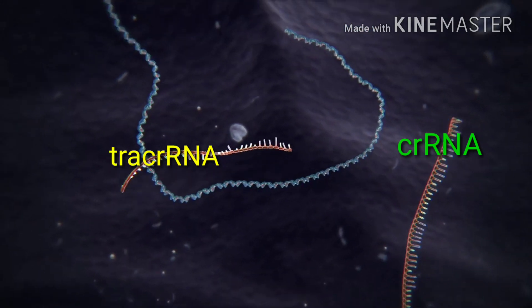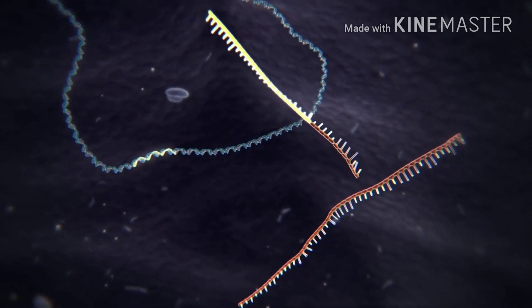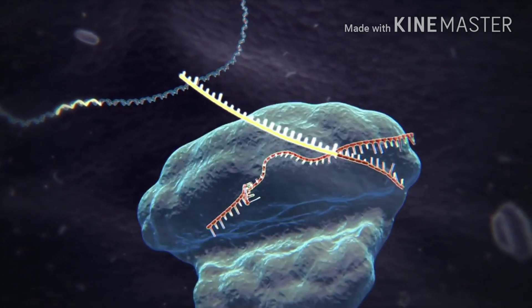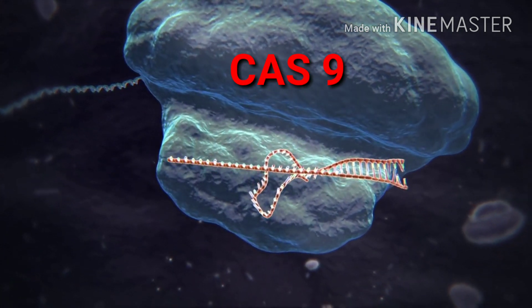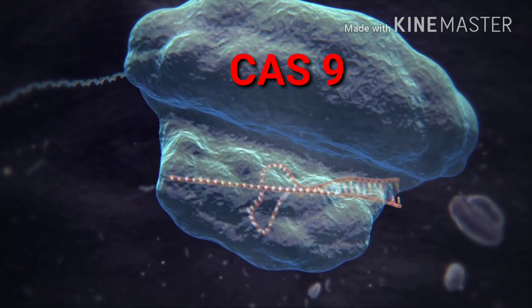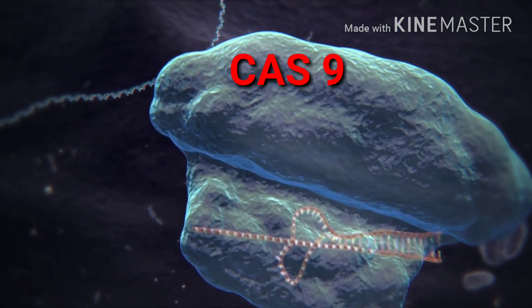The CRISPR-Cas9 system consists of CRISPR RNA, transacting CRISPR RNA, and protein Cas9. These RNAs then guide it to find specific sequences and make a break in the double-stranded helix.